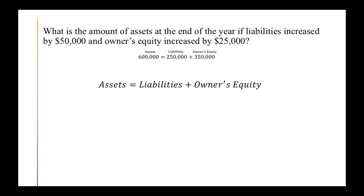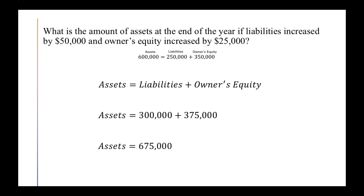Part C asks: what is the amount of total assets at the end of the year if liabilities increased by $50,000 and owner's equity increased by $25,000? Once again, we go back to our original numbers — assets started at $600,000, liabilities at $250,000, and owner's equity at $350,000. Our liabilities increased and are now $300,000, and our owner's equity increased and is now $375,000. So total assets equals liabilities plus owner's equity, giving us $675,000.